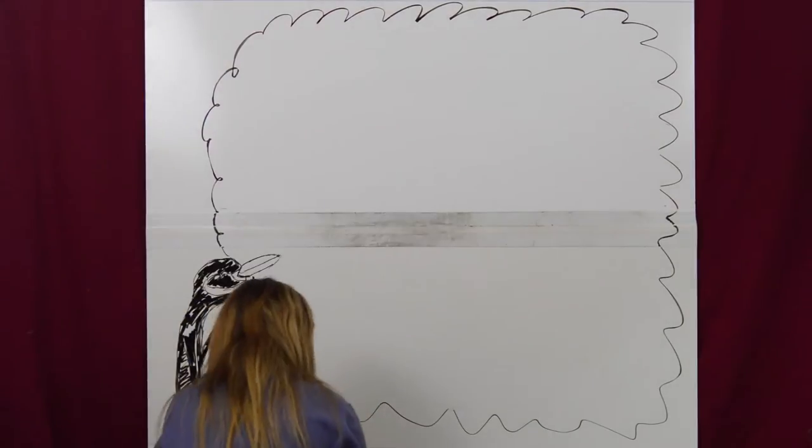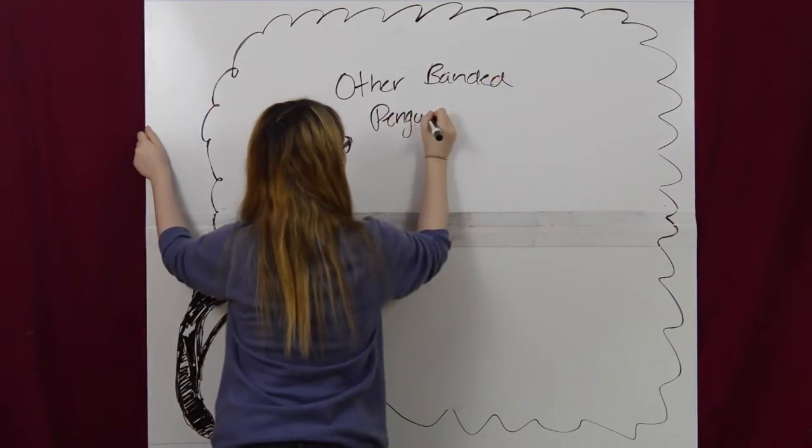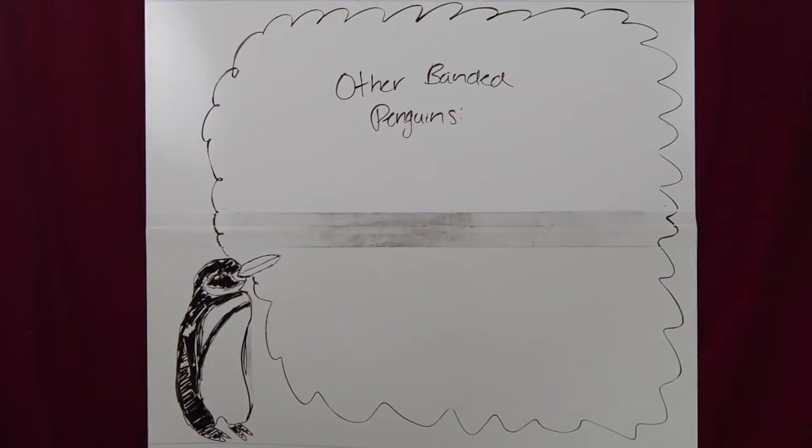The Galapagos penguins have the narrowest and least distinct head stripes and patterning of their genus, which includes the Magellanic, African, and Humboldt penguins.